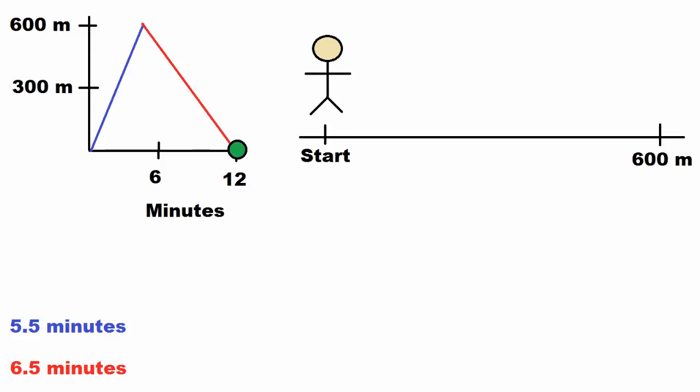You want to find the average velocity of each part of the trip, and you want to find the average velocity of the total trip.